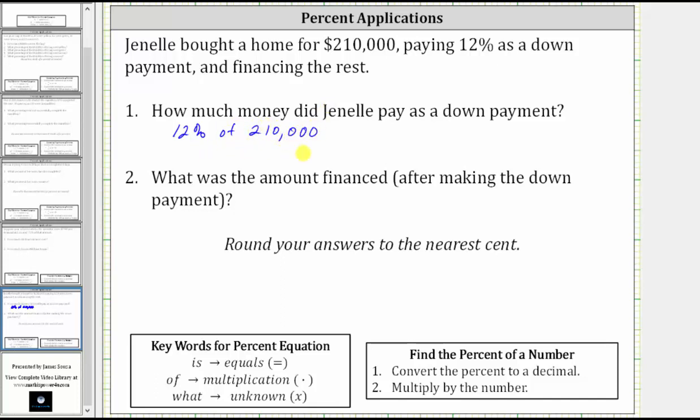To find the percent of a number, we convert the percent to a decimal and then multiply it by the number. Therefore, 12% of 210,000 is equal to 0.12, 12% as a decimal, times 210,000.